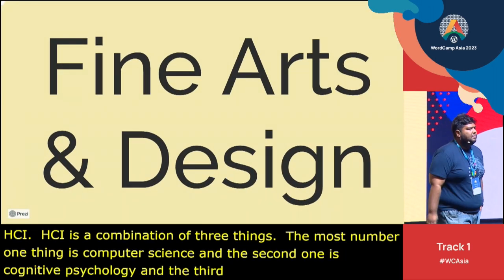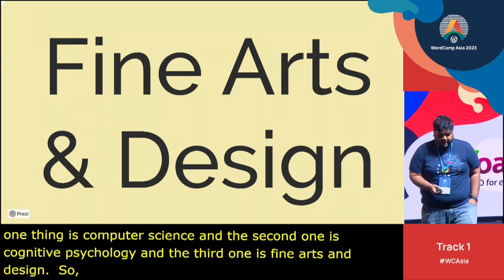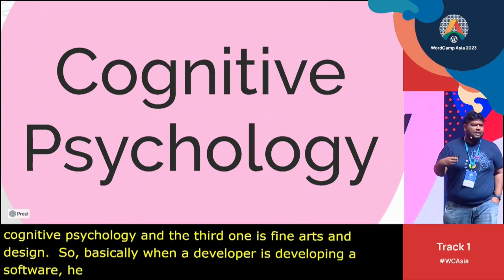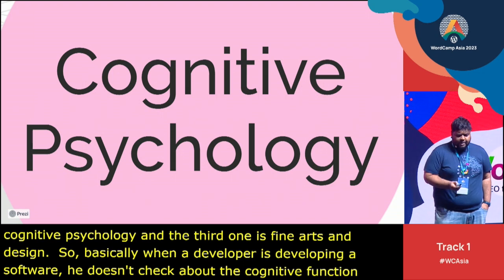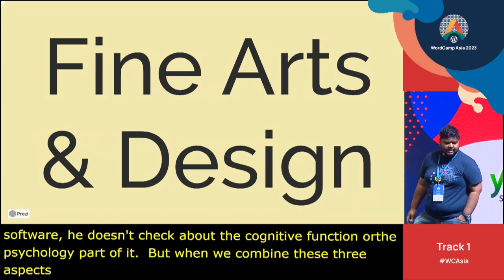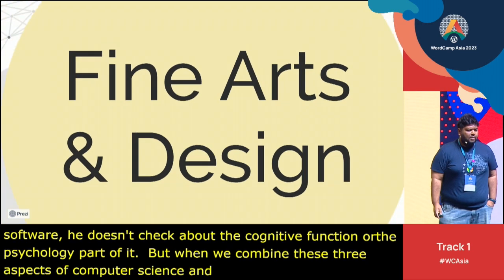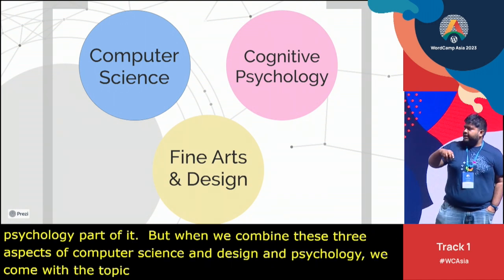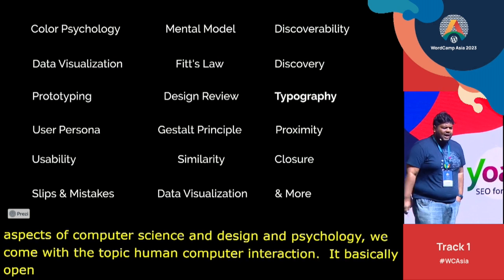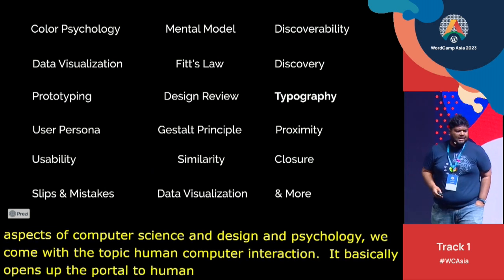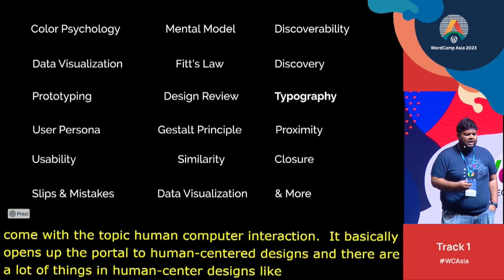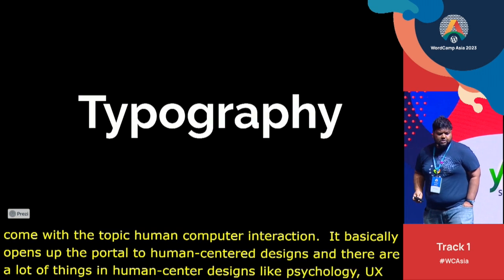When a developer is building software, they don't typically check the cognitive or psychological side of how users interact with it. But when we combine computer science, design, and psychology, we arrive at human-computer interaction. This opens up the portal to human-centered design, which includes color psychology, mental models, UX laws, usability, and much more. Today, I'm going to talk about typography specifically.